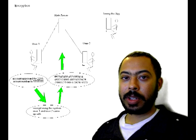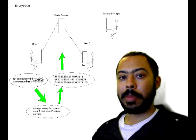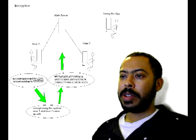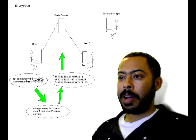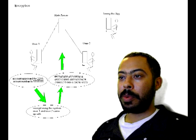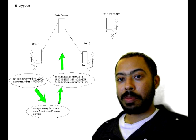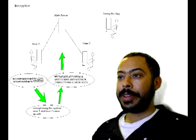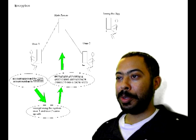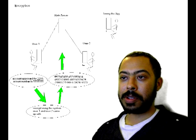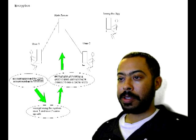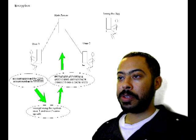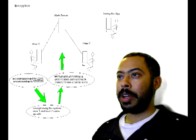Before User 1 sends the message, he encrypts it based on the system he and User 2 worked out — replacing all the letters in the original message with numbers. The original message is 'account approved,' and after encryption it becomes a bunch of garbled numbers. He then uploads the encrypted message to the web server.